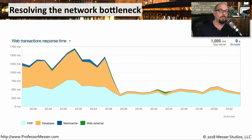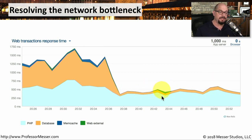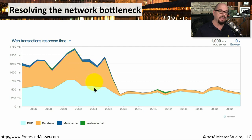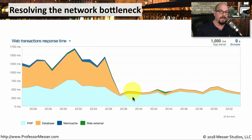It also helps if you know what the normal type of communication should be. If you know there shouldn't be any more than 100 milliseconds of difference in your database communication, and you suddenly you're getting 500 to 600 milliseconds of delay, then you know the problem is somewhere with that particular communication. And by resolving that bottleneck, you'll find that the overall performance of the application is improved.